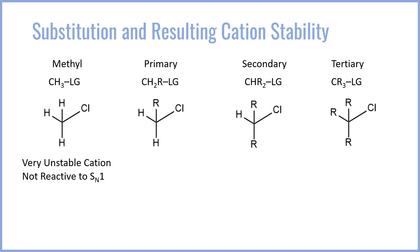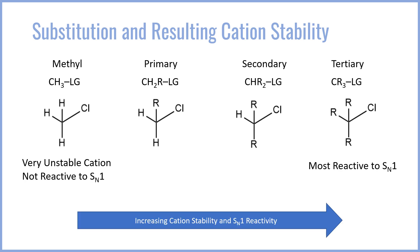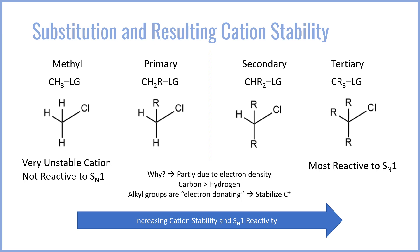Methyl cations are extremely unstable. A CH3+ species is so unstable, in fact, that it is completely unreactive towards SN1 because the cation cannot form. On the other hand, tertiary cations are the most stable — they are going to be the most reactive towards SN1, and that's typically where we do see SN1 reactions. In general, substitution increases cation stability, so as you move towards the tertiary end, SN1 reactivity increases. Somewhere between the primary and secondary cations there's an imaginary boundary: on the left-hand side we do not see SN1 reactions, and on the right we do. You will never see an SN1 reaction on a methyl or primary cation that does not have additional stabilizing factors like resonance.